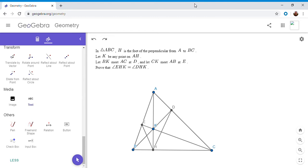Okay, so we have a triangle ABC. H is the foot of the perpendicular from A to BC. K can be any point on AH, so it could be the orthocenter or some other point. So there's a lot of flexibility there. Then we let BK meet AC at D, and CK meets AB at E. And we want to show that angle EHK is equal to angle DHK. It's a pretty interesting theorem.